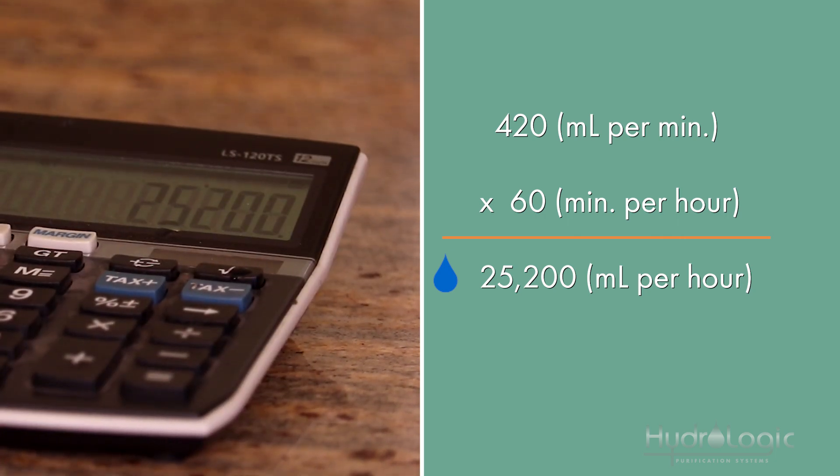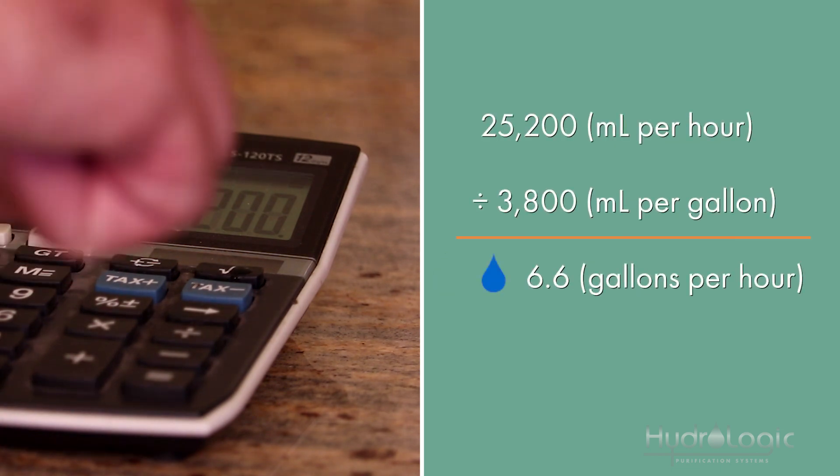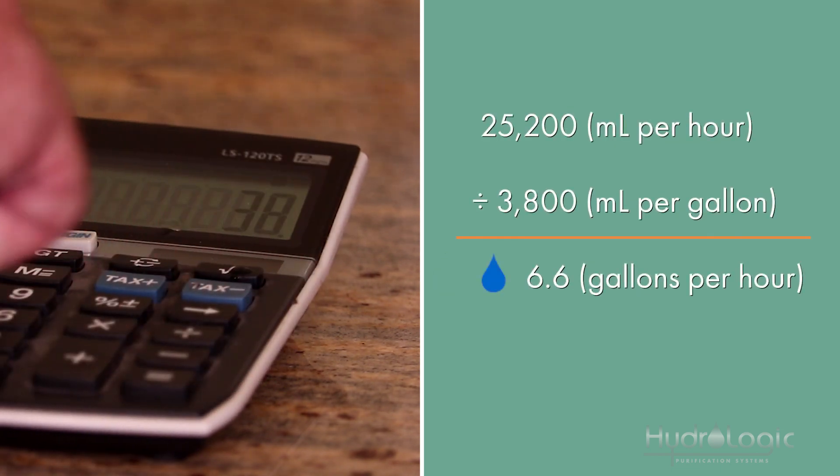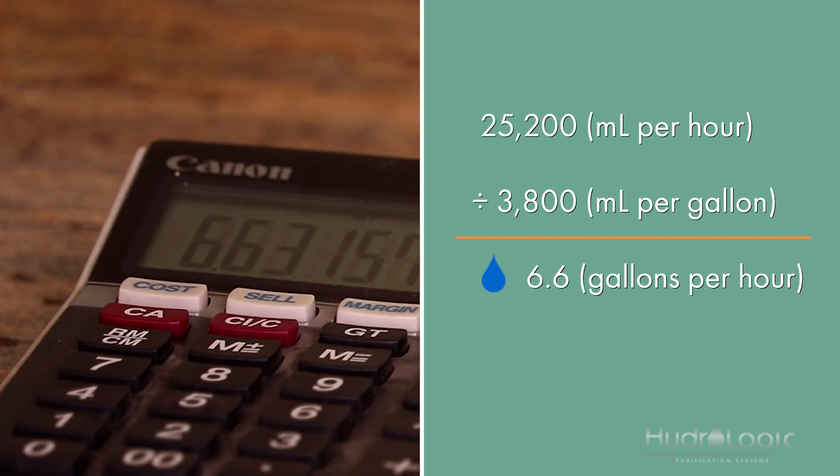But we want to convert that to gallons. I know that there's roughly 3,800 milliliters in a gallon, a little bit less, but that's close enough for the measurements we're taking today. So we'll divide that by 3,800. And there you have your gallons per hour: 6.6.